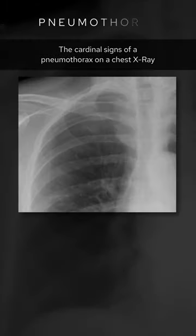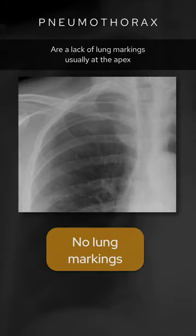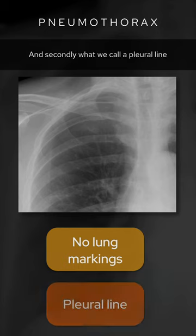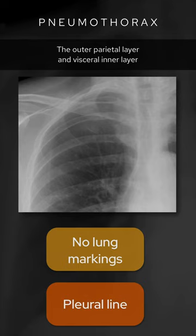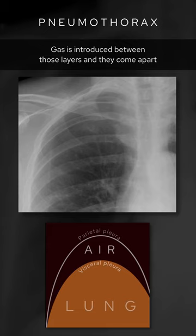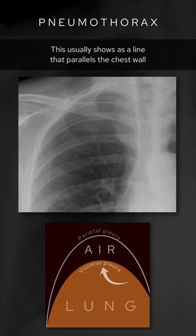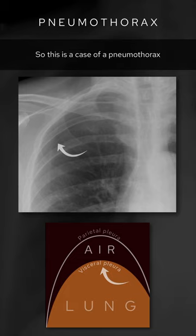The cardinal signs of a pneumothorax on a chest x-ray are a lack of lung markings, usually at the apex, and secondly what we call a pleural line. There are two layers to the pleura: the outer parietal layer and the inner visceral layer. In a pneumothorax, gas is introduced between those layers and they come apart. You should be able to see the visceral pleura as a thin white line that parallels the chest wall, and I think that's what we can see here. So this is a case of a pneumothorax.